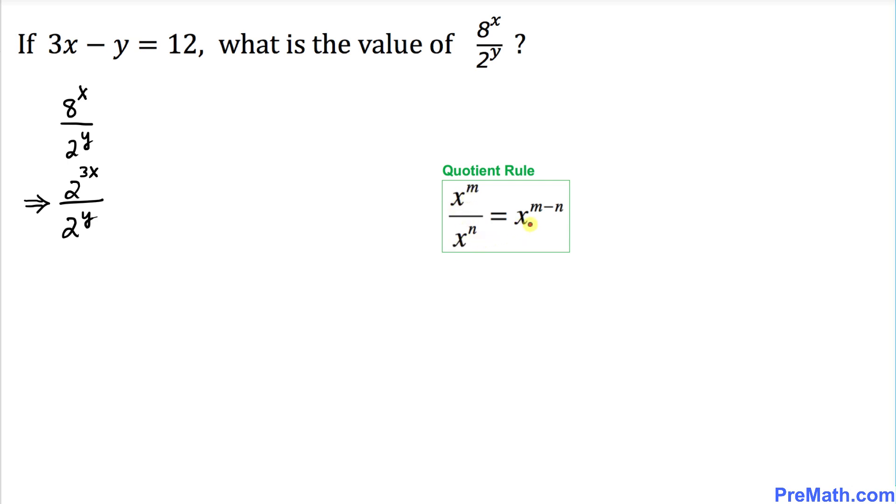In this case our base is the same. As we can see, our base is 2 which is the same over here. So we can write this as 2 power 3x minus y. Let's go ahead and write that one down.